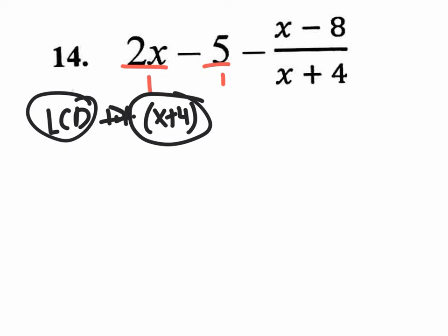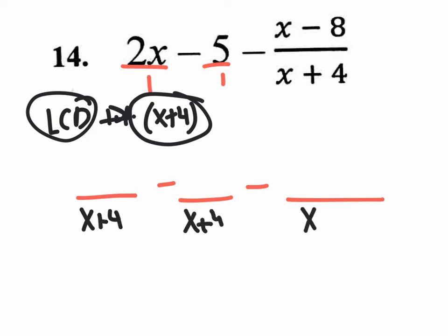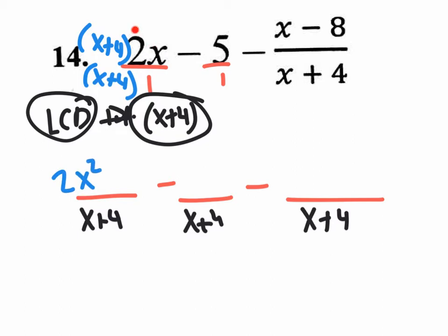So you need every one of your fractions to change to an X plus four denominator. We have one fraction minus another fraction minus another fraction. Our denominator will be the LCD, which is X plus four. To change the one on the original first fraction to an X plus four, you multiply both top and bottom by X plus four. You distribute two X times X, giving two X squared, and two X times four, giving positive eight X.